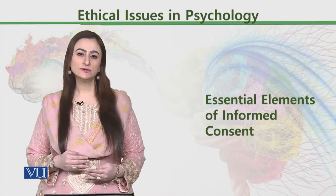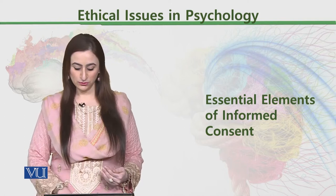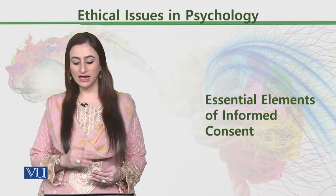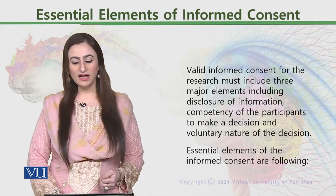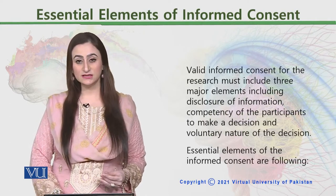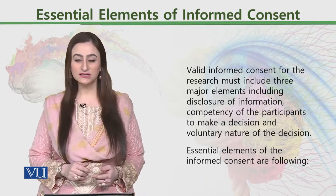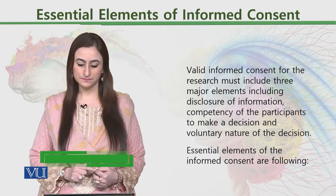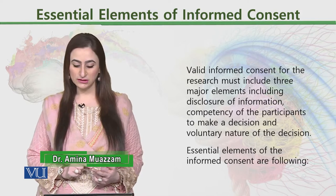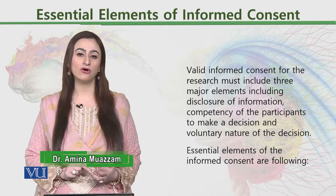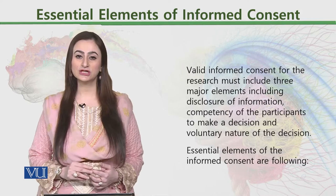Today, we are going to see what could be the essential elements of informed consent. Valid informed consent for research must include three basic elements: disclosure of information, competency of the participants to make a decision, and the voluntary nature of the decision. These three things are very important that we need to know about research.